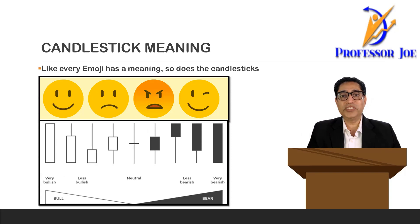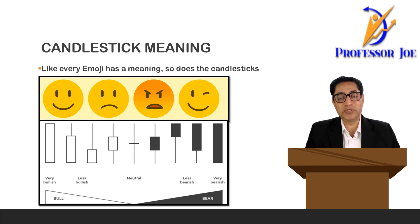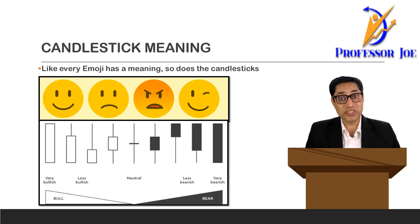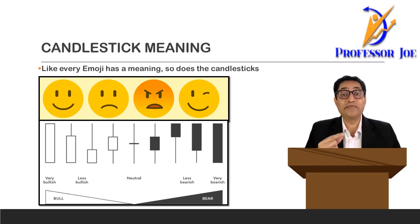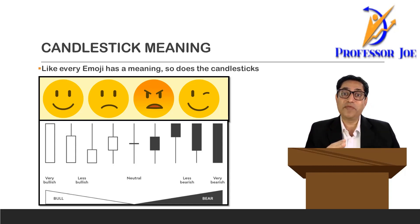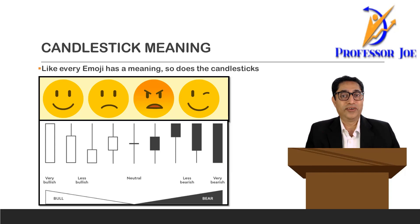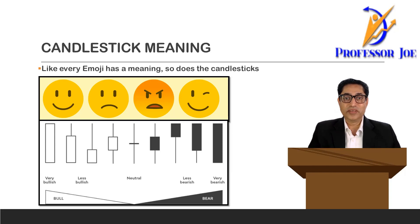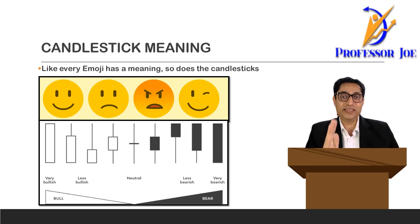Just like every single emoji has a different meaning — as you can see on the screen, the first is a smiling emoji, the second a sad emoji, the third an angry emoji, and the fourth a naughty emoji — every emoji shares a different feeling. In the same way, every single candlestick reflects the psychology of traders for that particular timeframe in the market. Your job is not to remember the names of the candlestick, but to understand the psychology of the traders and to crack that understanding of price movement.